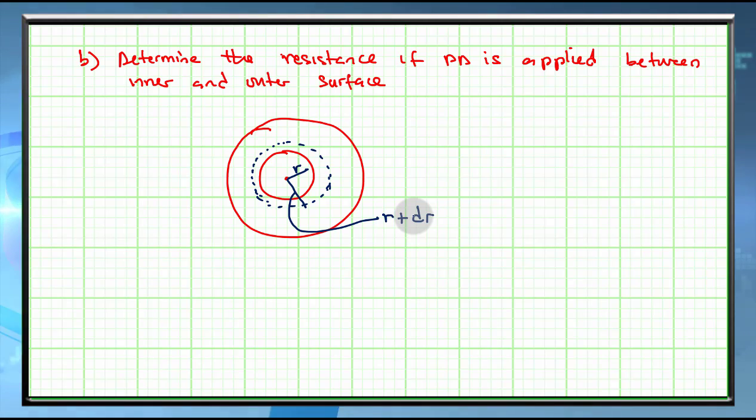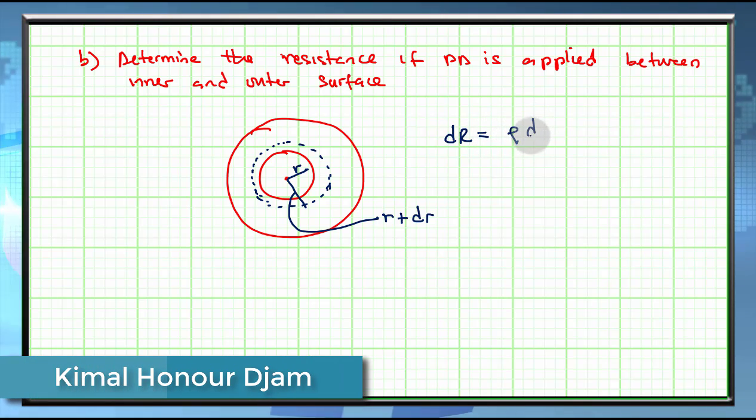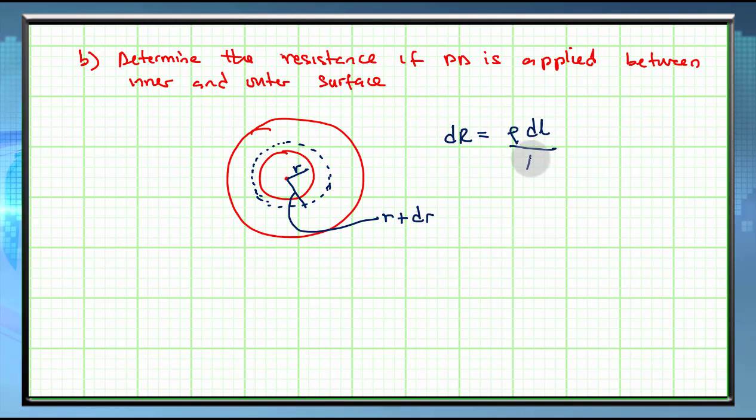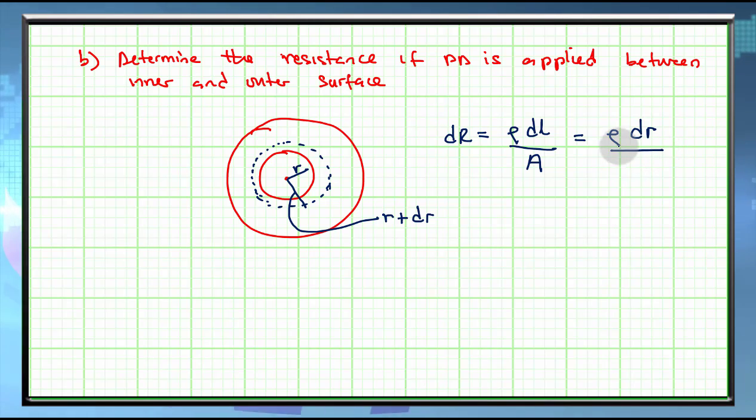Now the resistance dR will be equal to ρ dL divided by A, which is equal to ρ dR divided by 2πRL. This is the area of a cylinder. Hence the total resistance will be given by